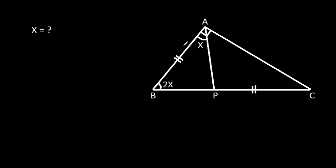In this video, we have been given that AB is equal to CP and angle BAC is 90 degrees. Angle ABC is 2x and angle BAP is x. We have to find x.